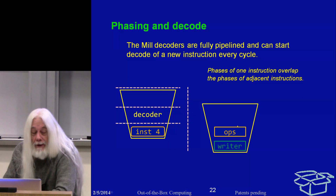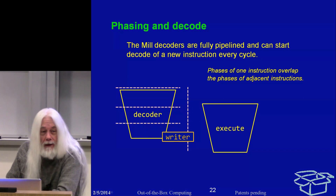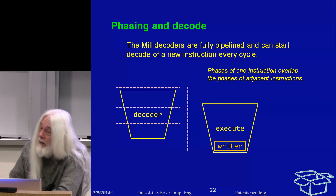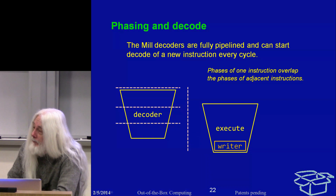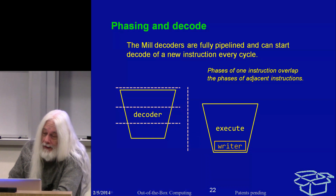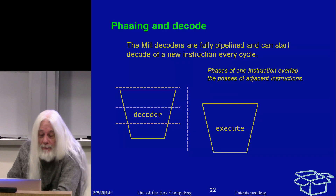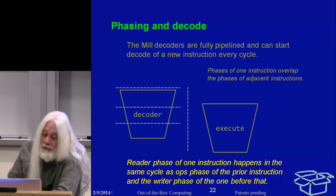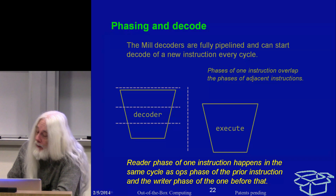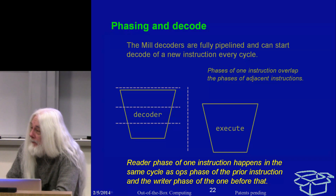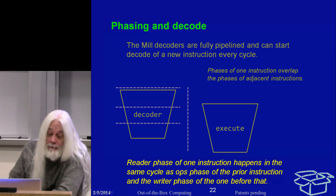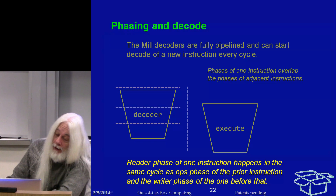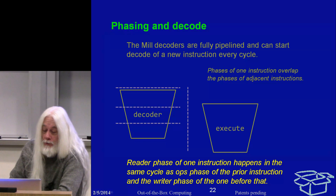The decoders are fully pipelined, so you can initiate the decode of a new instruction every cycle. The phases of instruction decode overlap with the phases of adjacent instructions. Reader phase happens in the same cycle as the op phase of the prior instruction and the writer phase of the instruction before that.